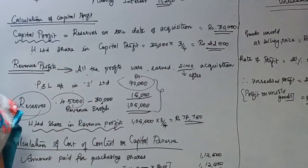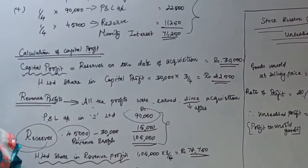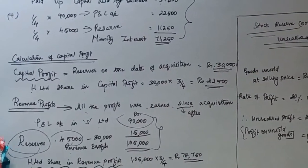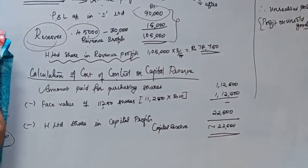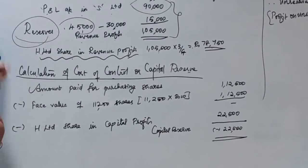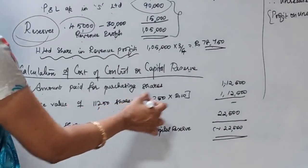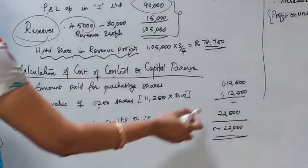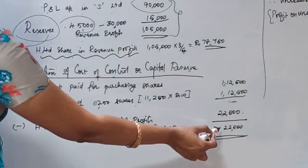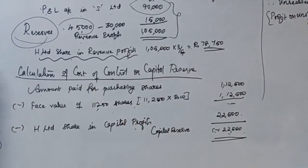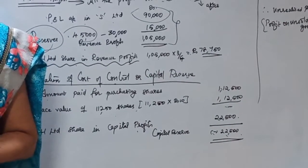H Limited's share in revenue profits (Rs.78,750) must be added to the profit and loss account when preparing the consolidated balance sheet. Minority interest will appear on the liability side of the consolidated balance sheet. Next, calculate cost of control or capital reserve. Amount paid by H Limited for purchasing shares is Rs.1,12,500. Deduct face value of 11,250 shares, also Rs.1,12,500 — balance is nil. Then deduct H Limited's share in capital profits of Rs.22,500. The resulting negative balance of Rs.22,500 is the capital reserve, shown on the liability side under reserves and surplus.